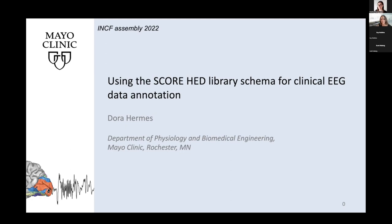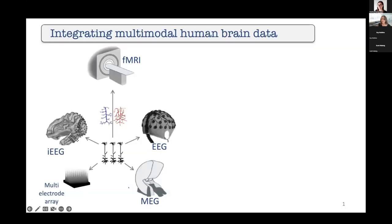I would like to talk about an HED schema library. Just to give a little bit of background, the reason why we are so interested in these types of standard annotations is because we want to integrate multimodal human brain data. We're interested in understanding different aspects of brain function, and by integrating different modalities from fMRI, EEG, iEEG, or specific things that we're working on.